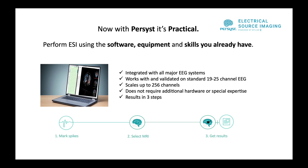Given these barriers, the Persist contribution has been to develop a solution for ESI that directly addresses them, where you can perform ESI using the software, equipment, and skills that you already have. The ESI solution from Persist is integrated with all major EEG systems. It works with and is validated on the standard 19 to 25 EEG channel arrays, and it does scale up to 256 channels. It does not require additional hardware or special expertise. You get results in three steps: first mark the spikes, select the patient's MRI, and then get results.